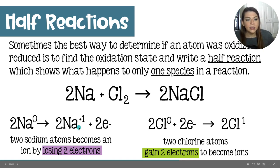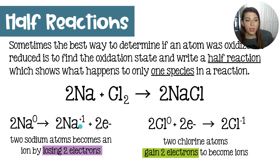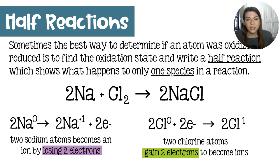Something I want you to notice is that this half reaction is balanced in terms of mass — we have two sodiums on each side — and it is balanced in terms of charge. We have neutral on the reactant side, and our two sodium ions will be neutralized in terms of charge by these two electrons. Positive two and negative two in total gives us zero. That's one of the ways to check your half reaction to make sure that you did it correctly.